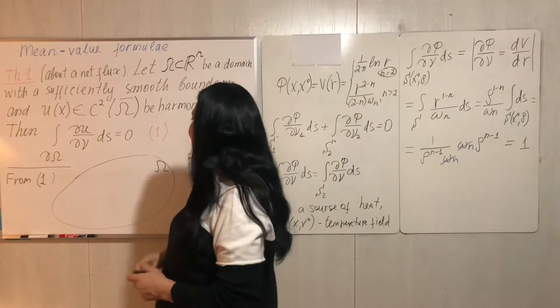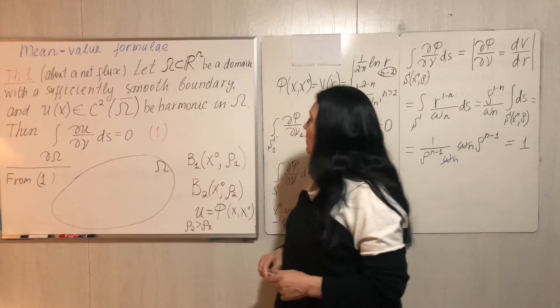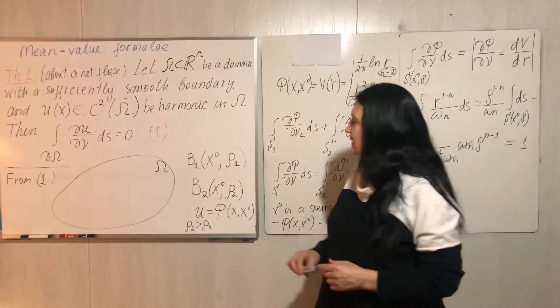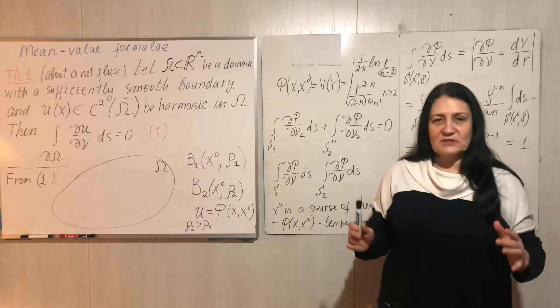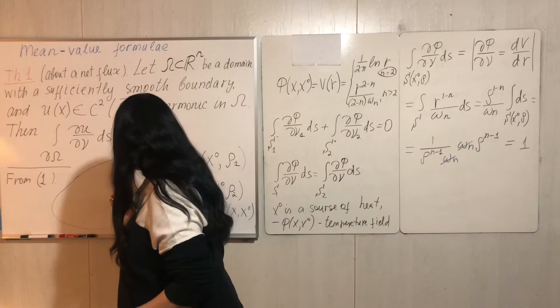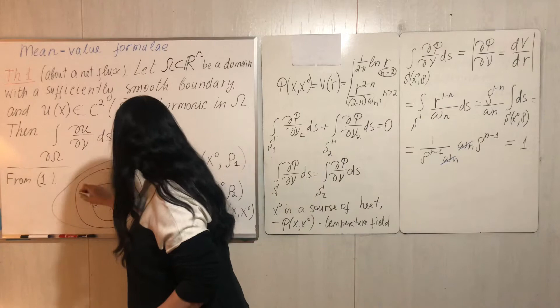Formula 1 illustrates a remarkable fact. Let's look at domain omega, and take two numbers rho_1 and rho_2, assuming rho_2 is bigger than rho_1. In this domain omega, let's consider two balls centered at point x₀: one with radius rho_1 and one with radius rho_2.